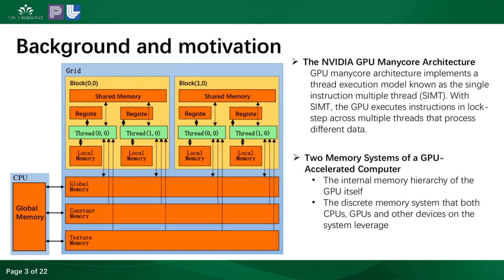The GPU-accelerated computer system can be considered to have two memory systems. The first is the internal memory hierarchy of the GPU itself, and the second is the discrete memory system that both CPUs, GPUs, and other devices on the system leverage. As shown in the picture, GPU memory is more complex than CPU memory hierarchy. Different memory has different capacity and speed, and there are significant trade-offs depending on the type of memory used.